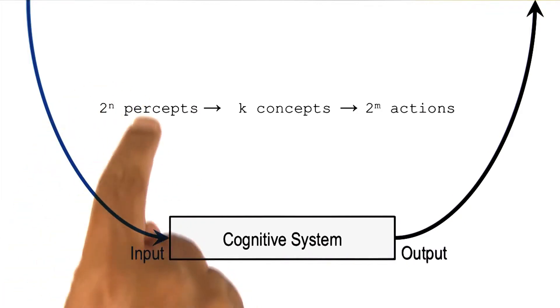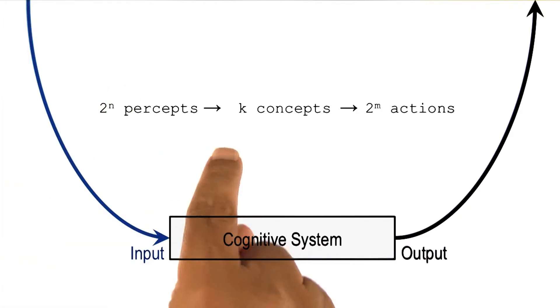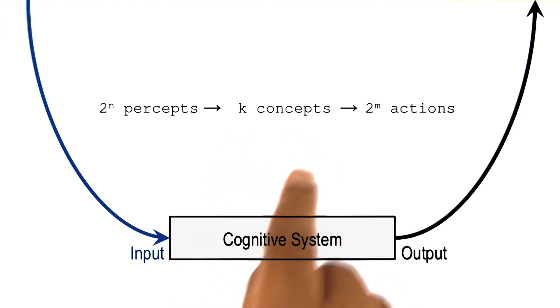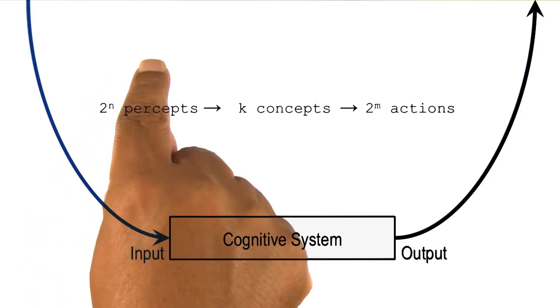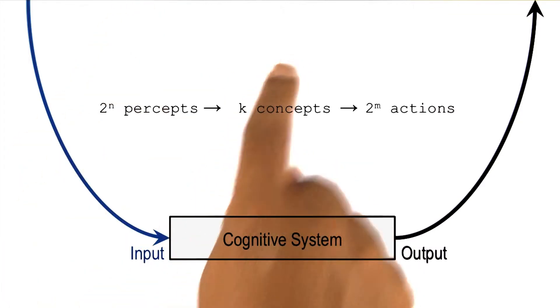Suppose that this 2 to the power n percepts could be mapped into k concepts, where each of these k concepts is an equivalence class for large number of these combinations. So 2 to the power n may be very, very large, but k is a much smaller number.